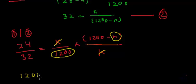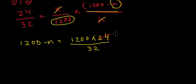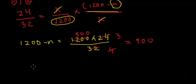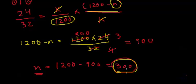The new equation becomes: 1200 minus n equals 1200 times 24 divided by 32. Since 24 and 32 are both multiples of 8 — 8 times 3 is 24 and 8 times 4 is 32 — this simplifies to 1200 times 3 divided by 4, which equals 900. Therefore, n equals 1200 minus 900, which is 300. So 300 soldiers were transferred to another fort, causing the food to last 32 days instead of the remaining 24.